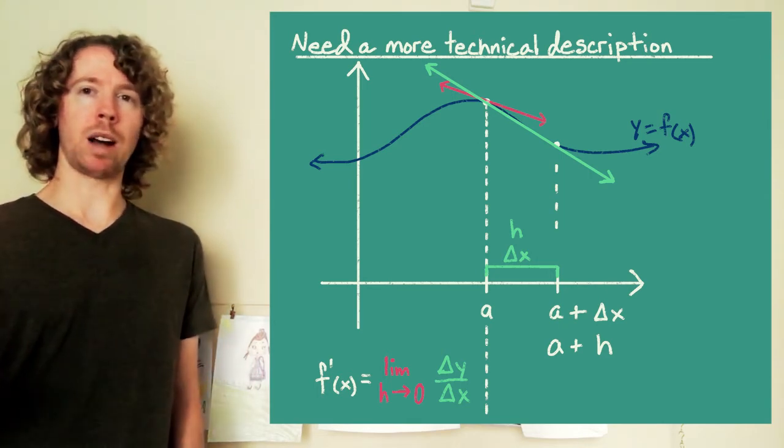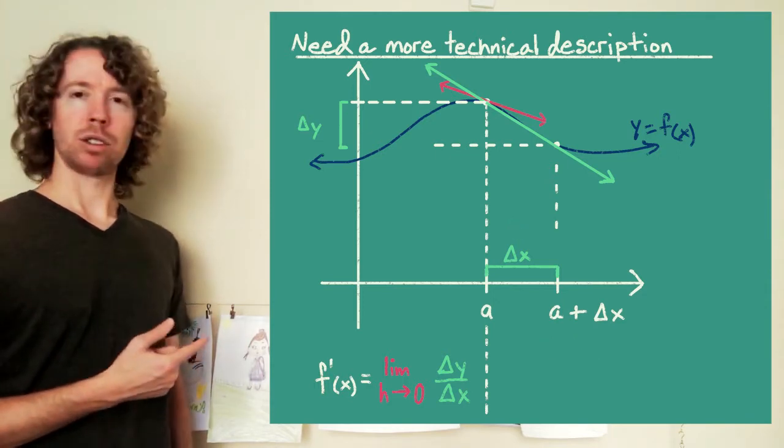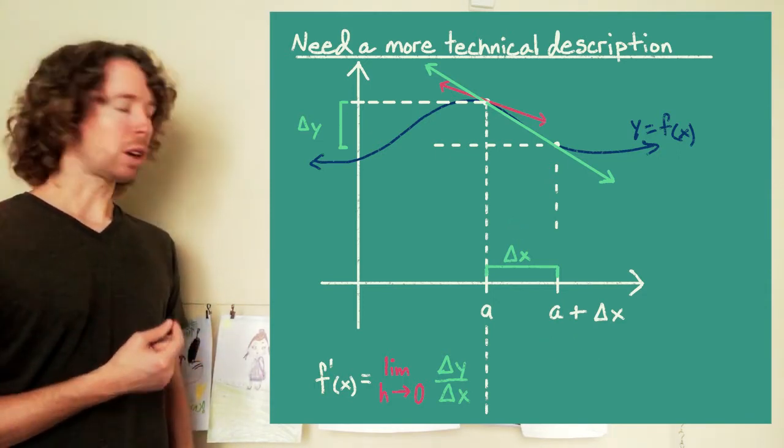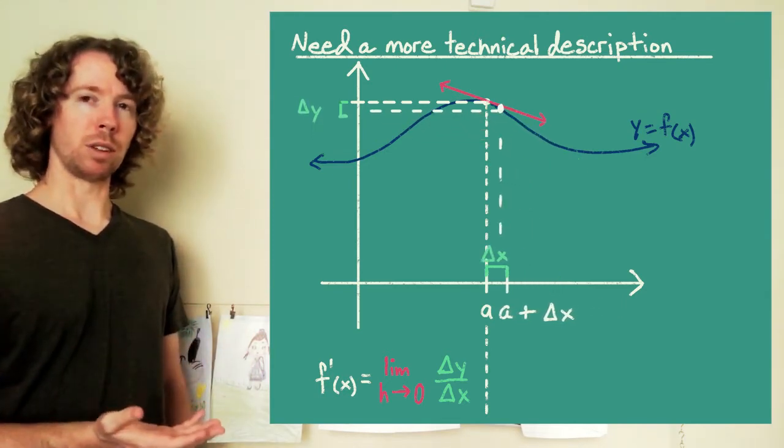The limit as delta x goes to zero of change in y over change in x. Let's represent the change in y as delta y. So as we let that change in x shrink down to zero, look at what's happening to the change in y. It's also shrinking down to zero.